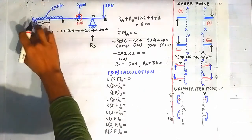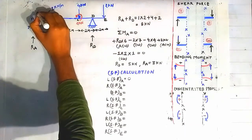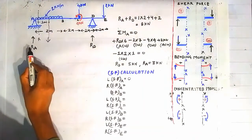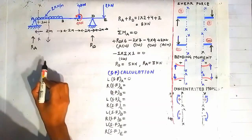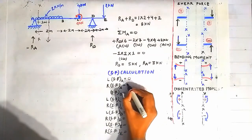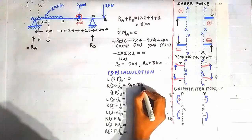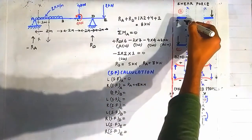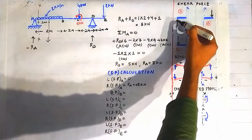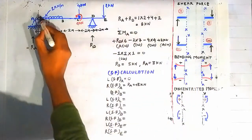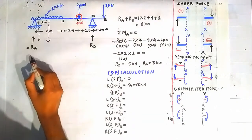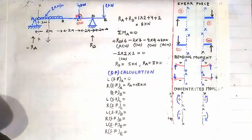For shear force on the right side of point A, we construct a section through the right side of point A. Looking on the left side of this section, reaction RA = 3 kN is present. According to the sign convention, a force acting on the left-hand side of a section in the vertically upward direction is treated as positive. So the shear force on the right side of point A is +3 kN.